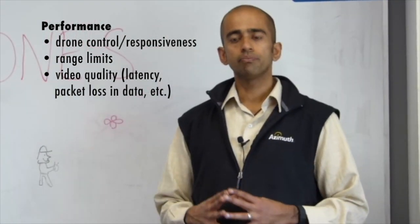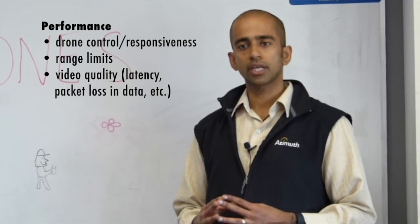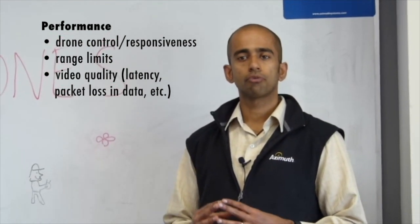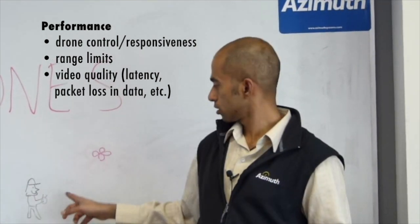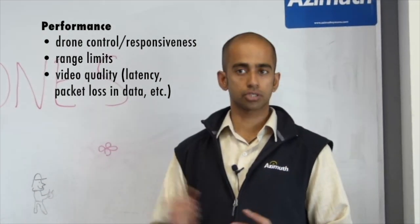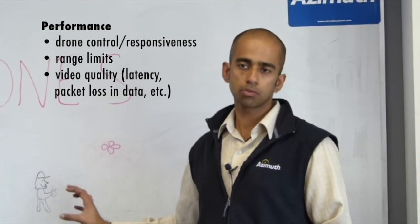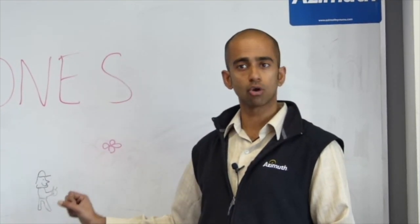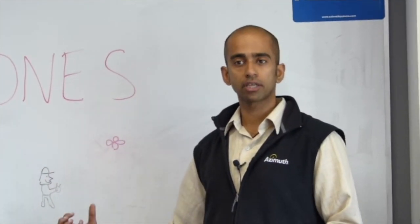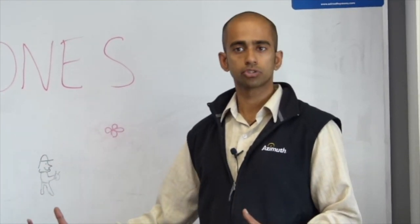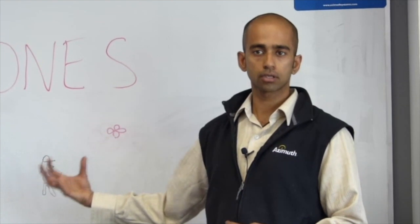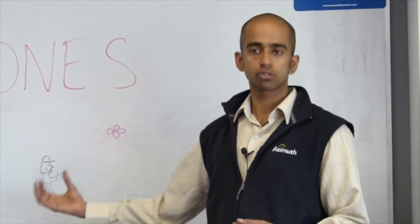In today's video, we will talk about how you can test the performance of a drone under typical user scenarios. This could be things like a drone flying away from the user here, or flying in circles around the user. We will start with this simple scenario. Towards the end of the video, we will talk about more complex scenarios, say, how does the drone perform when there are other drones in the neighborhood, or when there are other Wi-Fi or other interference sources.